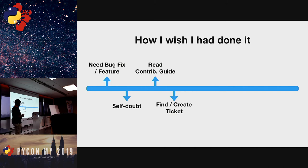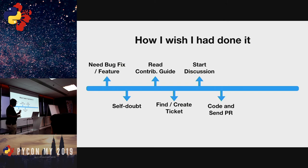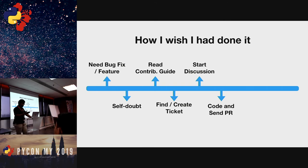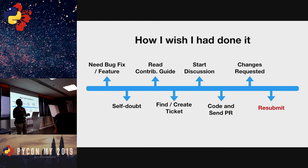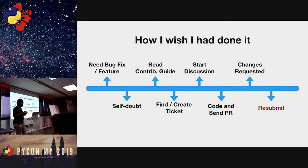I wish I had done it like this: first, just the self-realization — understanding that we need something. Then move on to the self-doubt — that's going to come, it's human nature. But then I should have read the contribution guides. Almost all mature projects have these things — like how you should approach it, how to raise a bug, how to submit code. Then find and create a ticket, start a discussion, discuss the overall solution, and then start coding. Because you don't just code at first — you think about the solution. Then code and send a PR. Change requests will be made no matter how proficient you are — everything can be better. Keep an open mind and accept suggestions, thinking: is this really going to make my code better? If it does, let's do it. And then getting it merged.